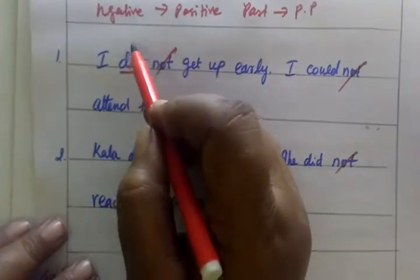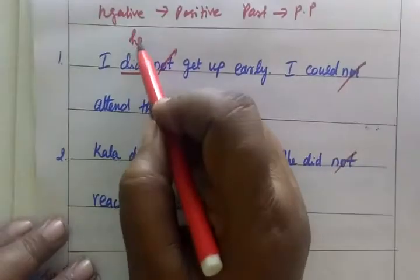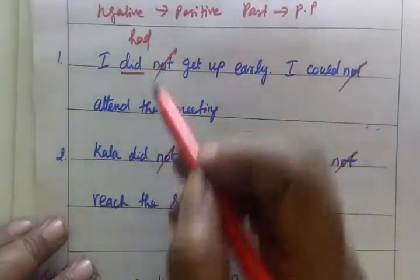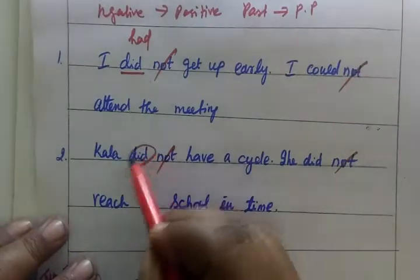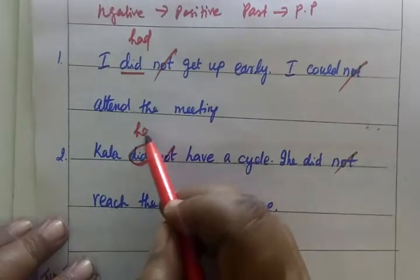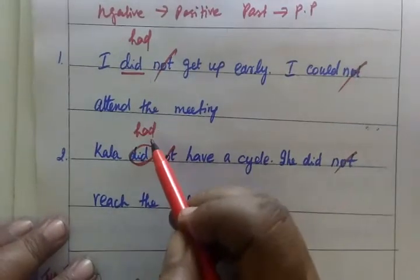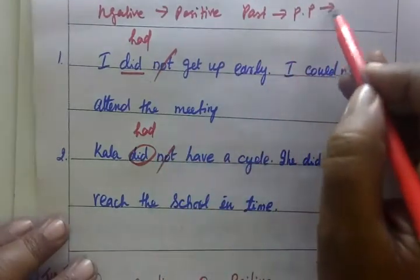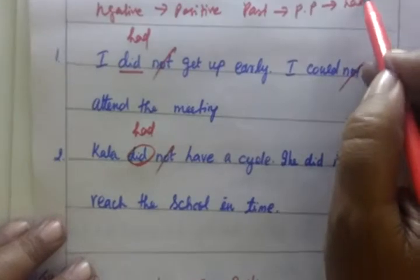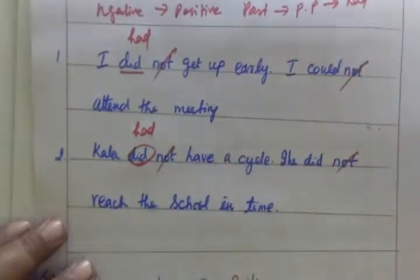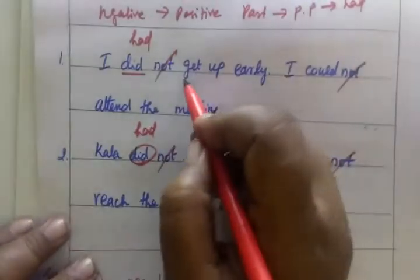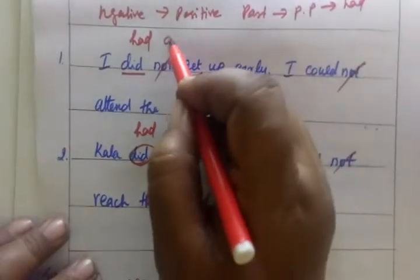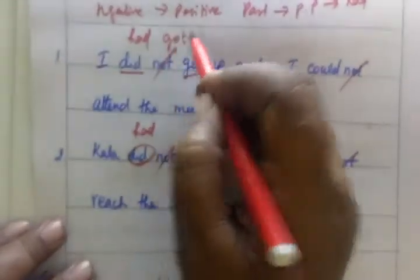We call it 'had' for past perfect. How do we do this? Past perfect — we start from 'had,' and then put the third form of the verb.